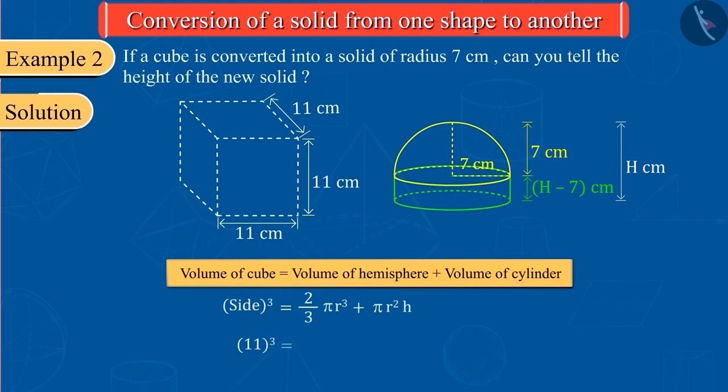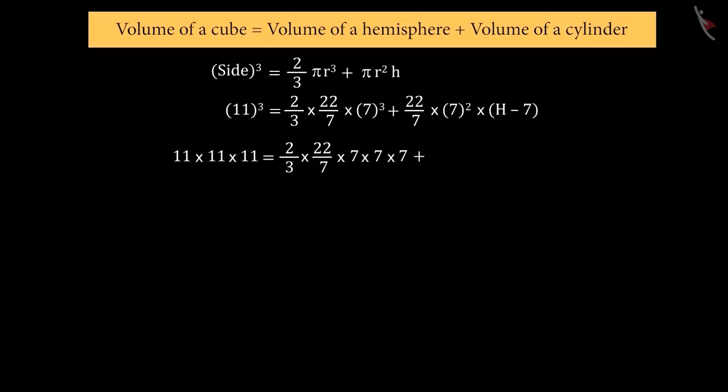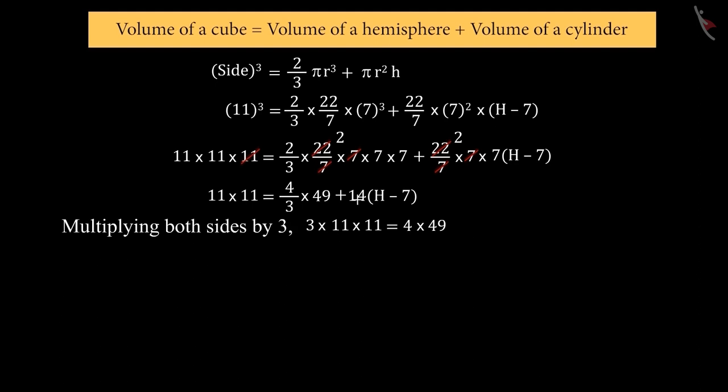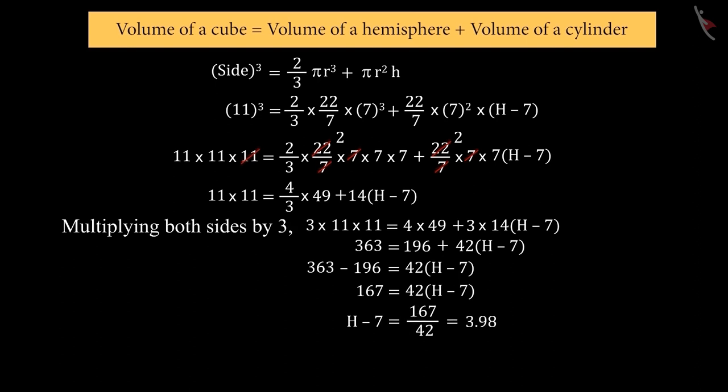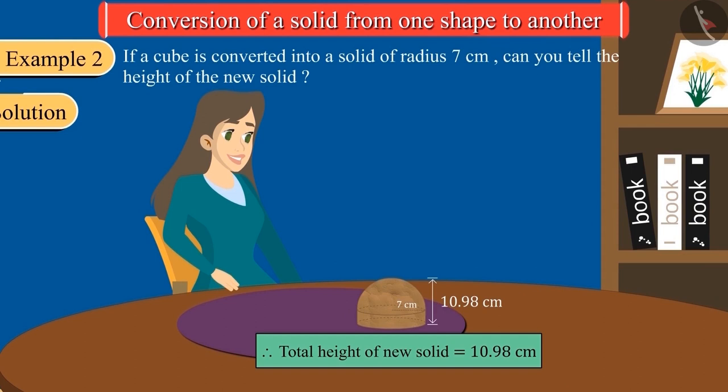On substituting all values and solving them, we get H equal to 10.98. So, the total height of the new solid will be 10.98 cm.